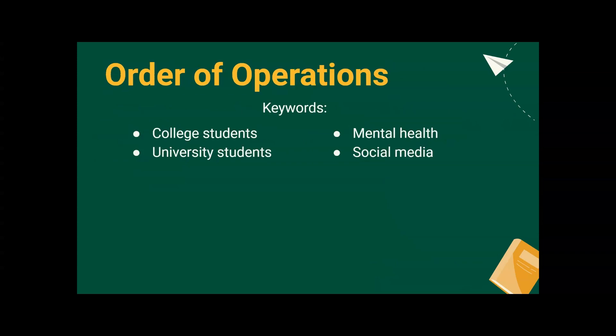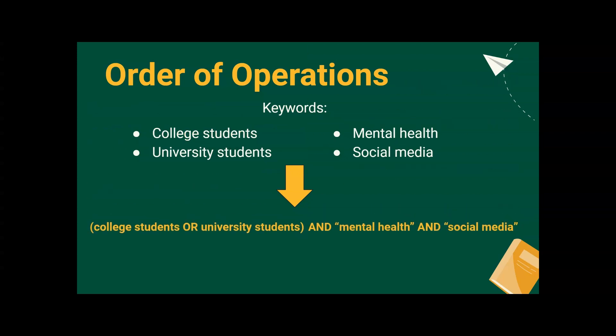If you want to use both AND and OR operators, use parentheses around the synonyms you're connecting with OR. In this example, we want results that are on social media, mental health, and college students or university students. To build the string, we will specify our population first, putting college students or university students in parentheses, then connecting it with mental health and social media, each in their own set of quotations. This will make our search directly honed in on our research topic.